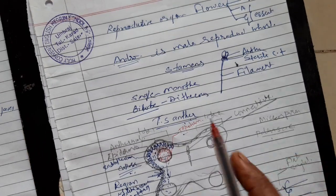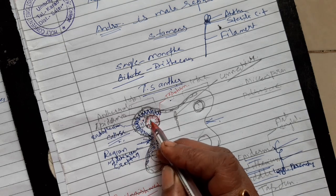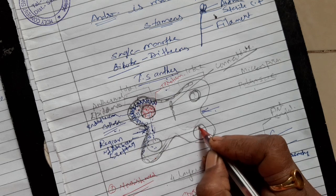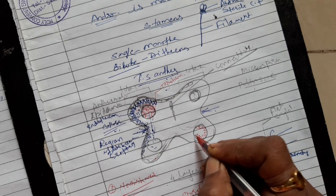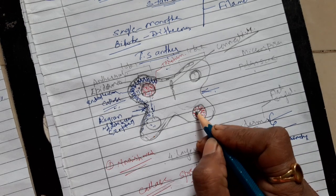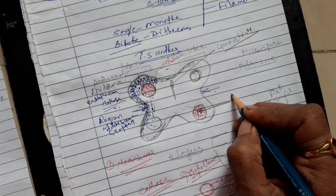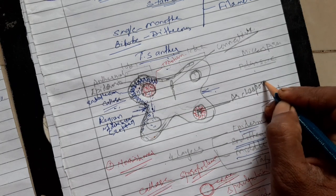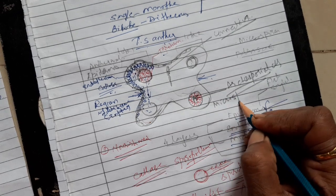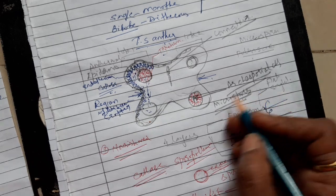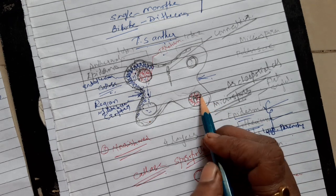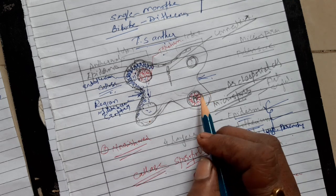In a young anther, the cells inside the microsporangia are tightly packed. These cells are called archesporial cells. Archesporial cells help in the formation of microspores. As the anther grows, the microsporangia is called a pollen sac, and in that pollen sac the pollen grains are formed. This process will be studied in the next point — microsporogenesis.